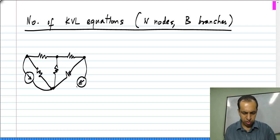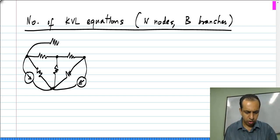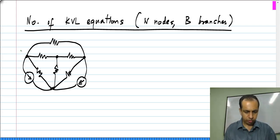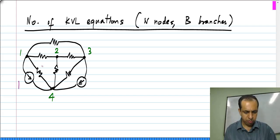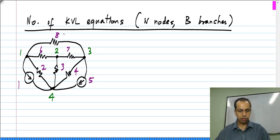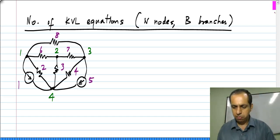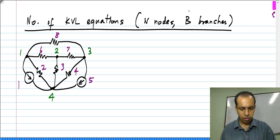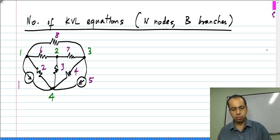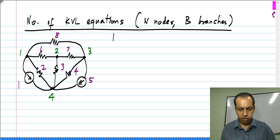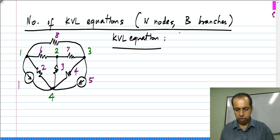I will still consider the same circuit with 1, 2, 3, 4 nodes and 1, 2, 3, 4, 5, 6, 7, 8 branches. Now, how do we count the number of KVL equations? First of all, we write KVL equations around loops.